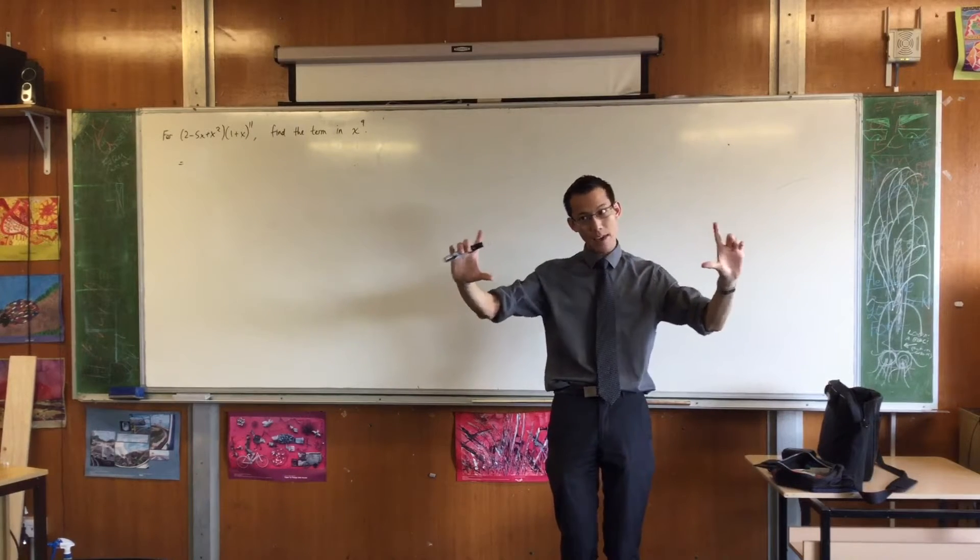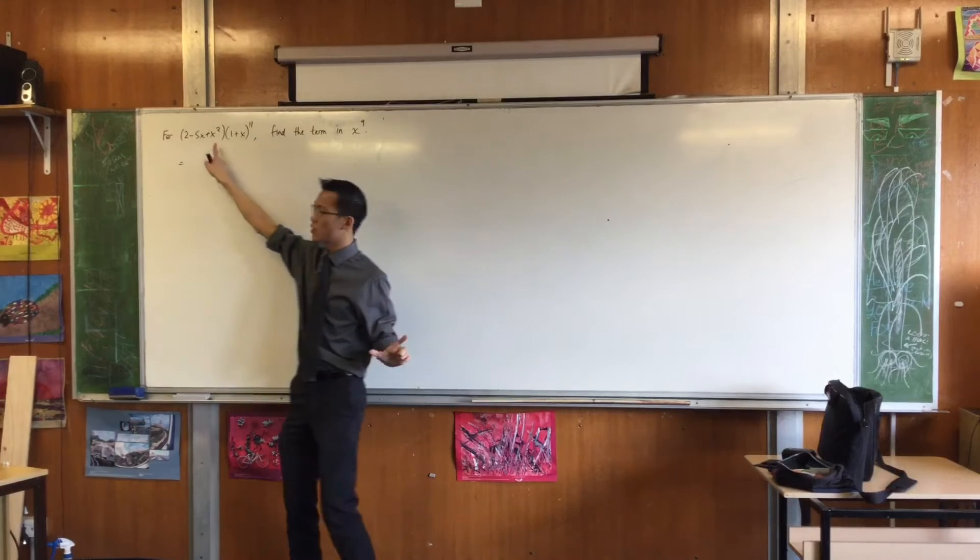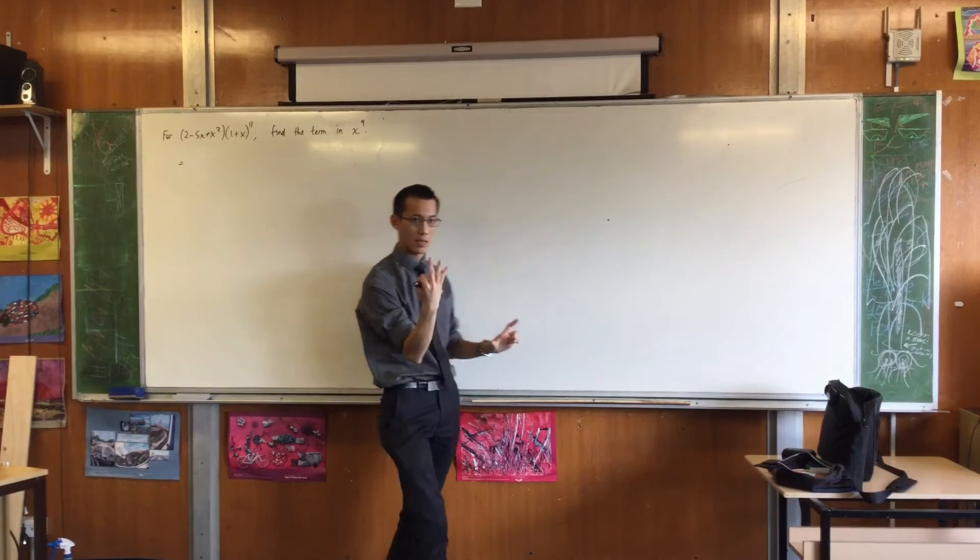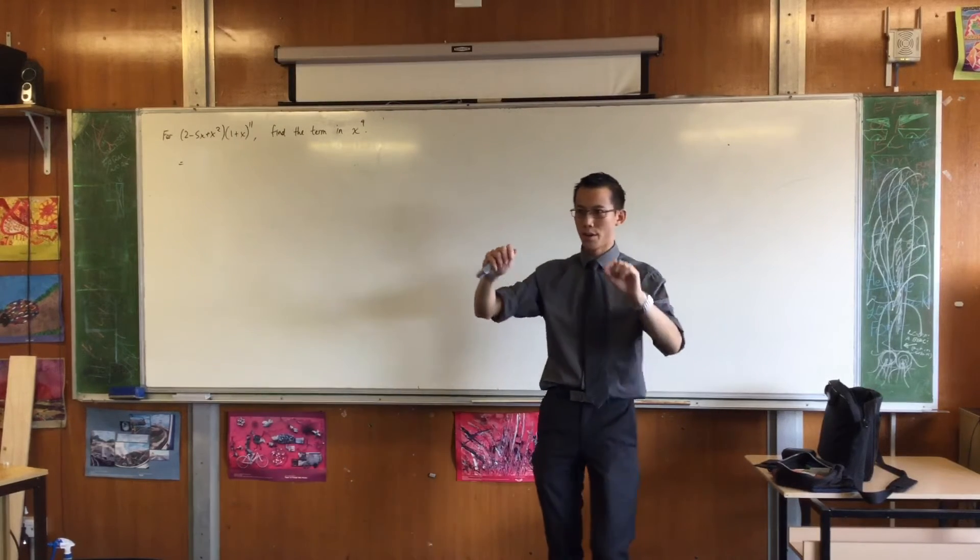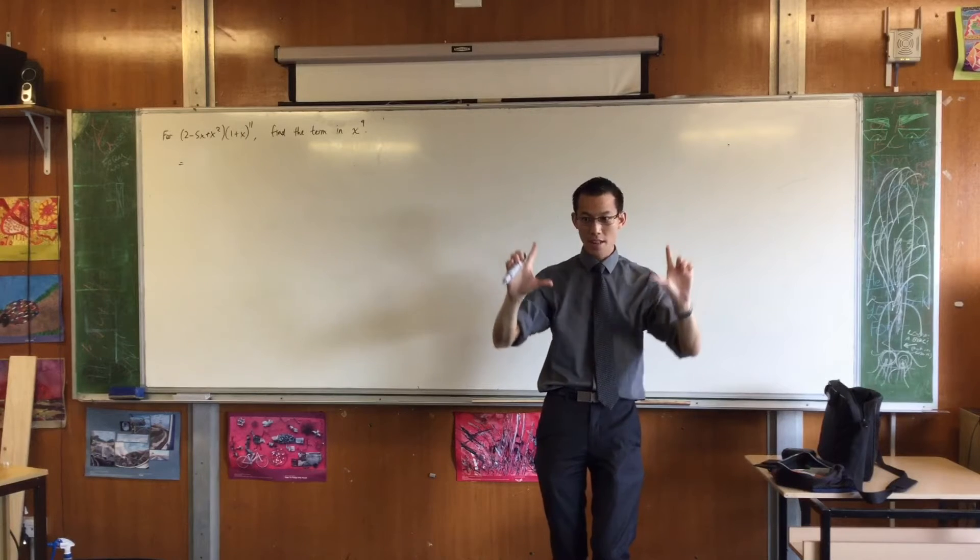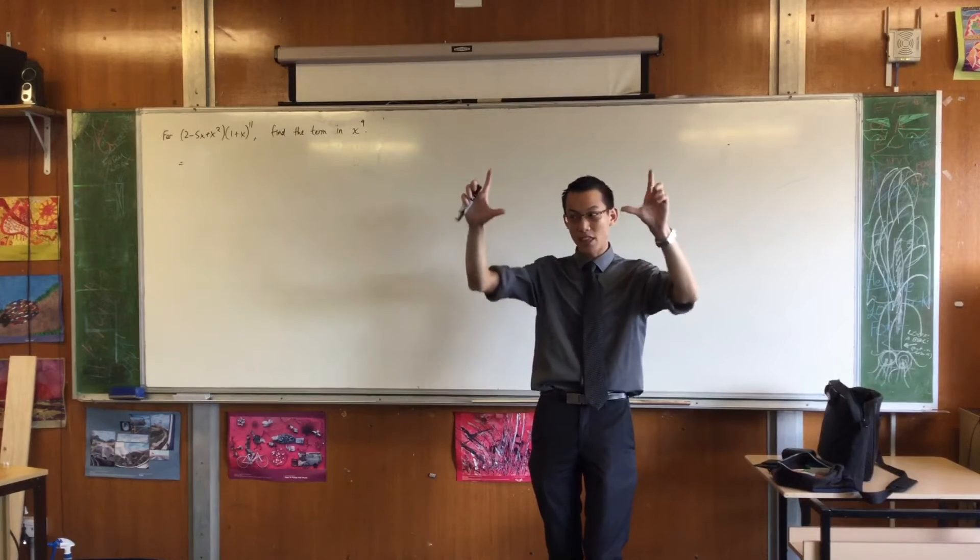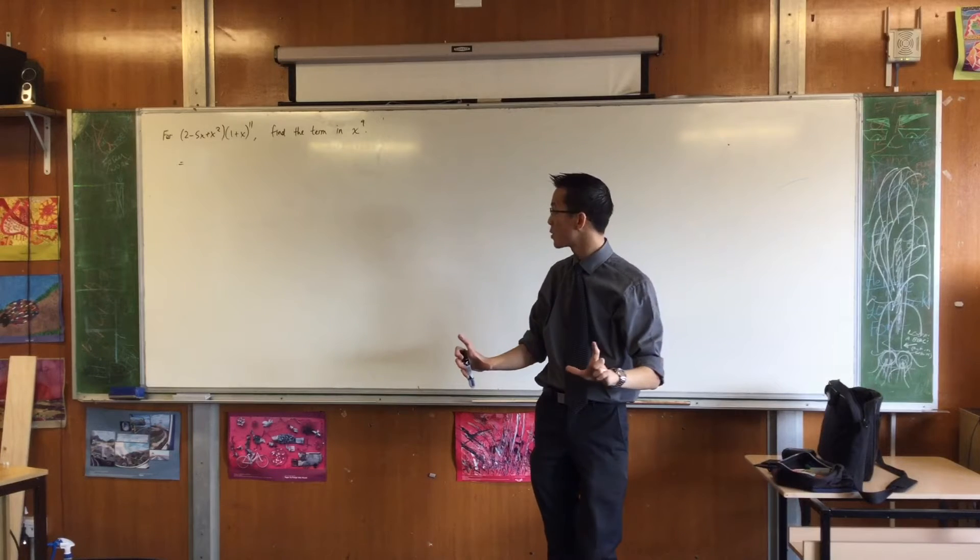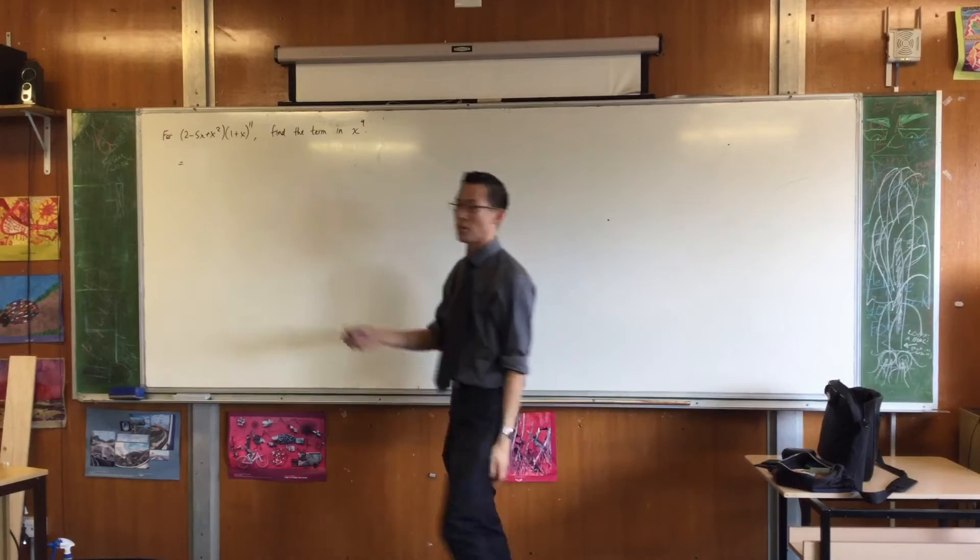Now, if I expanded that thing out, it would have 12 terms, but then I multiply it by this, which has 3 terms, right? So therefore, there will be these 12, then another 12, then another 12. There will be 36 terms, and I assume there will be a lot of like terms.